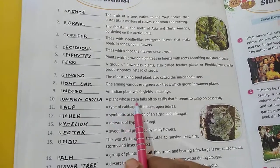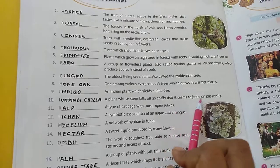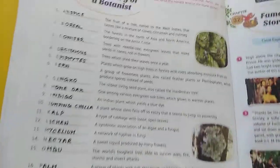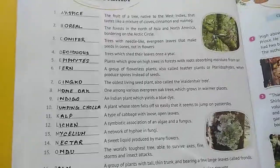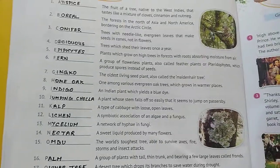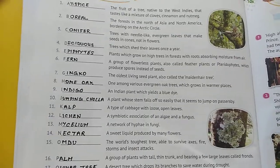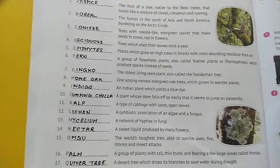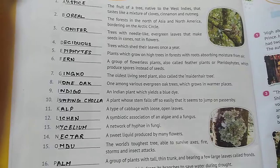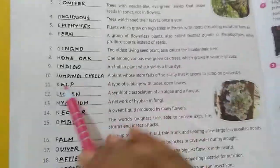Number ten: a plant whose stem falls off so easily that it seems to jump on passersby. They are called the jumping cholla.